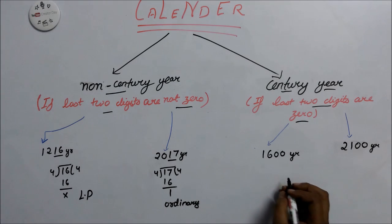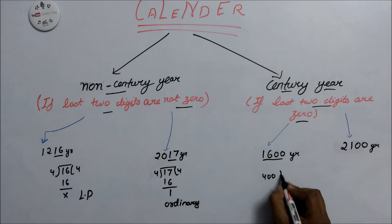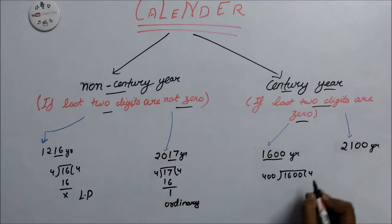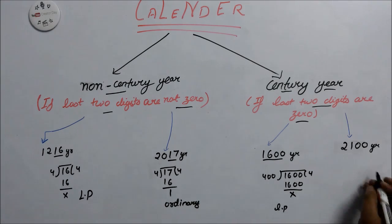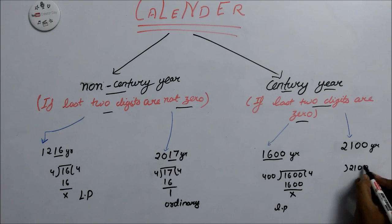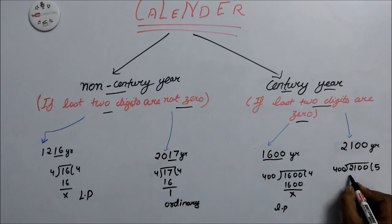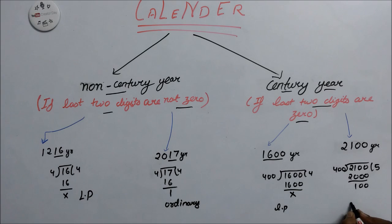In the case of a century year, we divide the whole number by 400. If that gives remainder 0, it is a leap year. If the remainder is 100, it is an ordinary year.